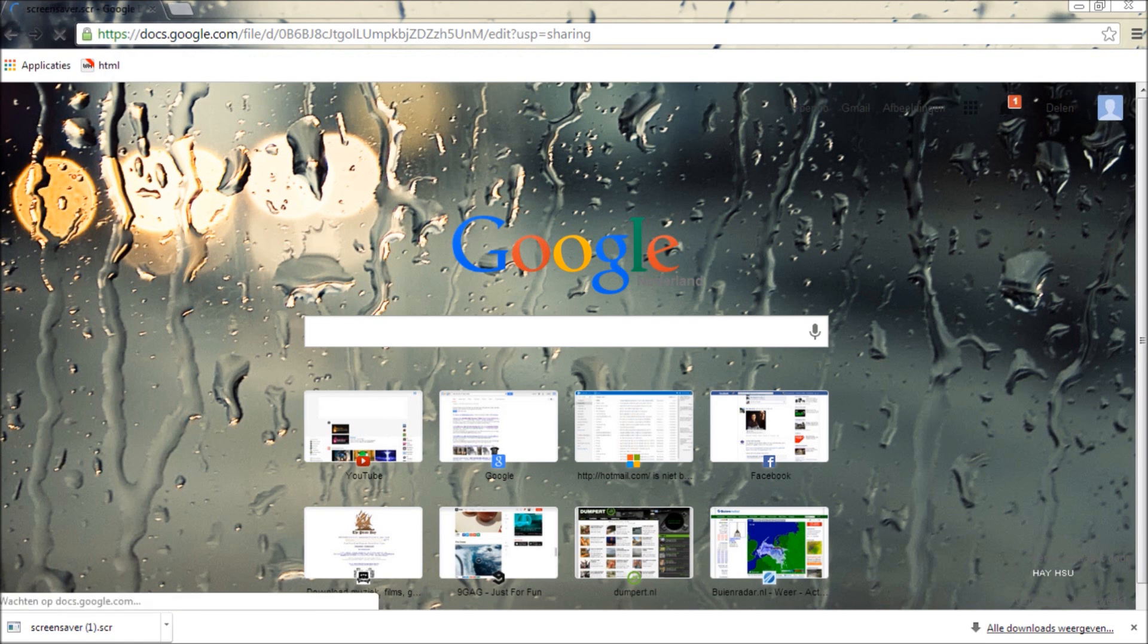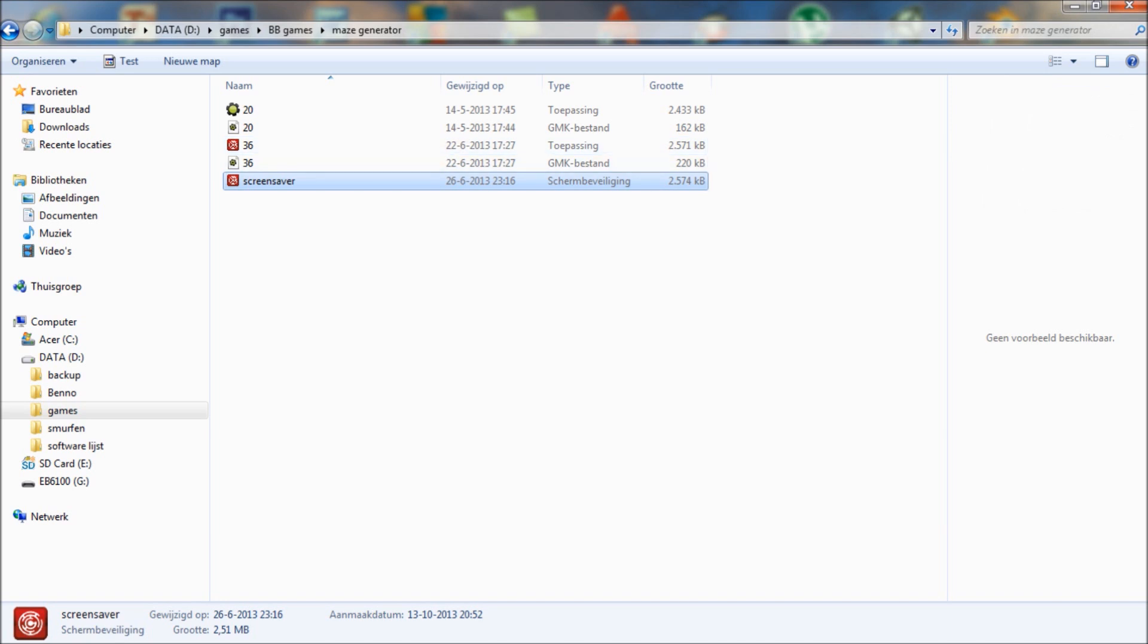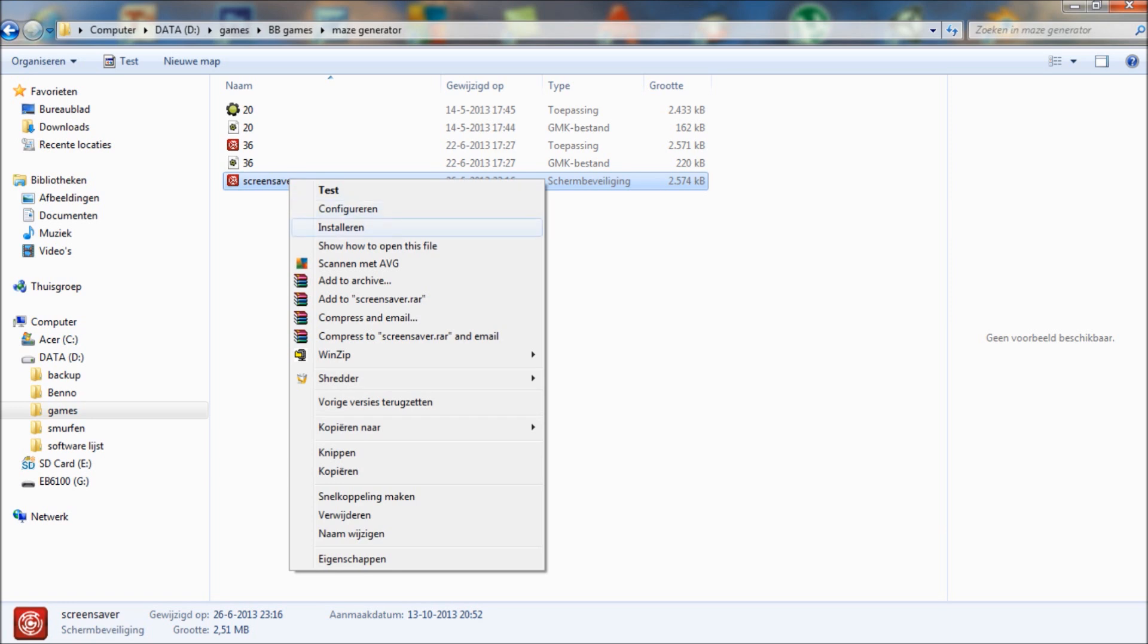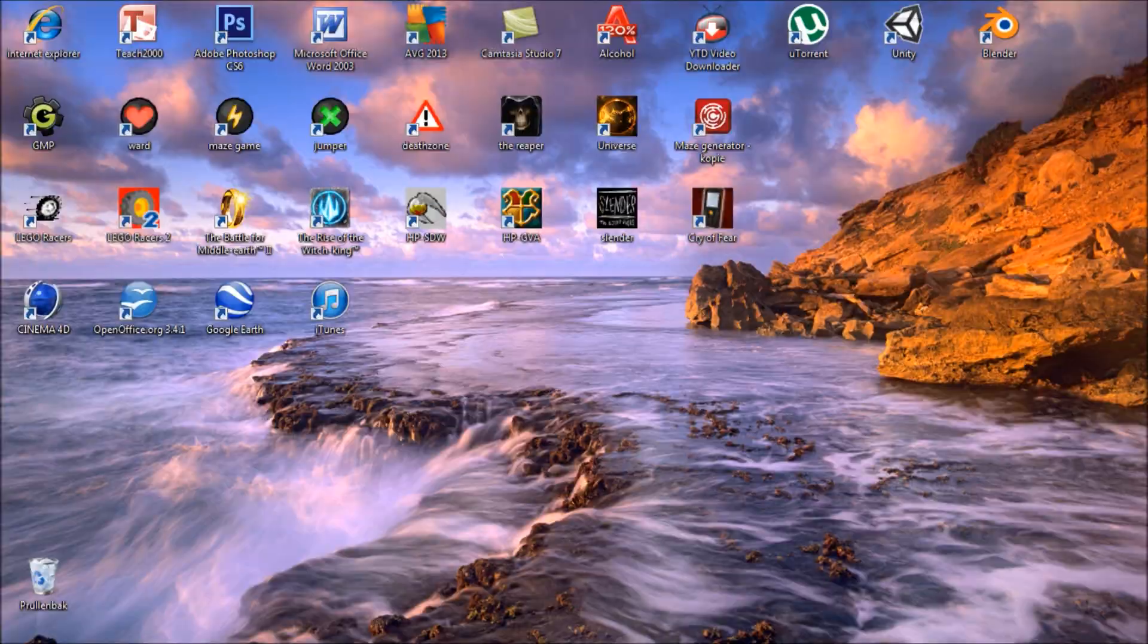If you don't have a Google account, you will have to make one. If you have a Google account, just click download and it will download a file called screensaver. Just right click on it and then install. And everything will be installed on your computer and you have an awesome maze generating screensaver. It will look like this.